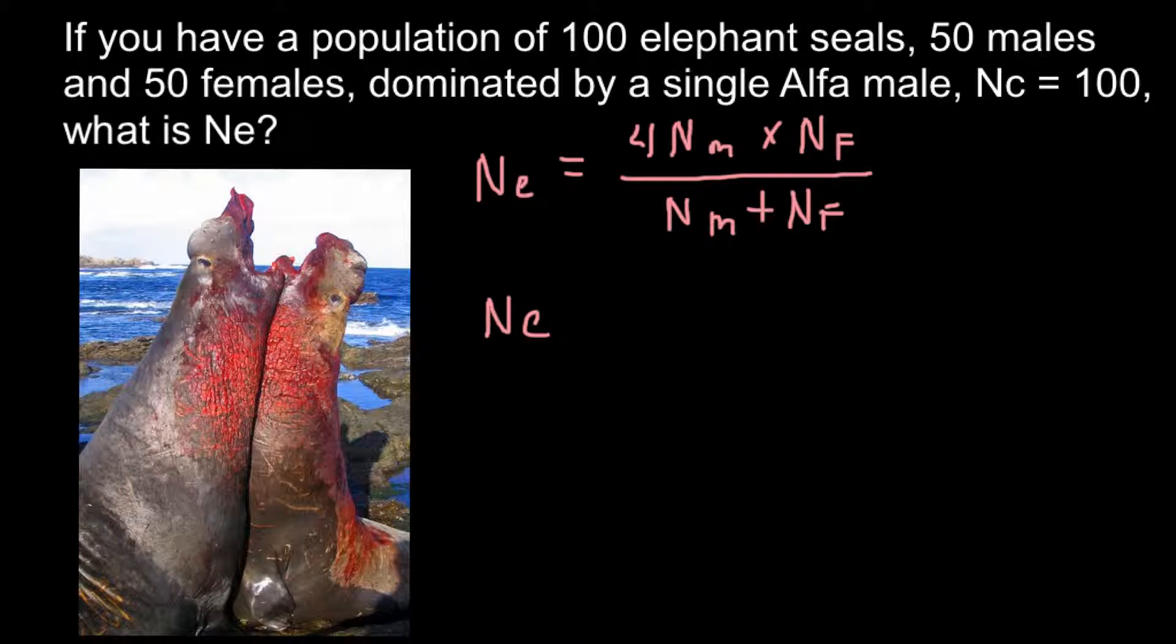Where NE, effective population size, equal to when we have balance between sexes, for example, the number equal. So, in this case, we have NM plus NF, and in this case, NE, effective population size, would equal to NC, number of animals' census.